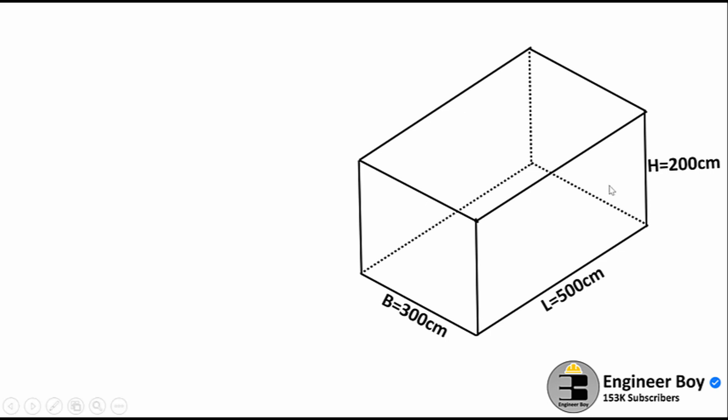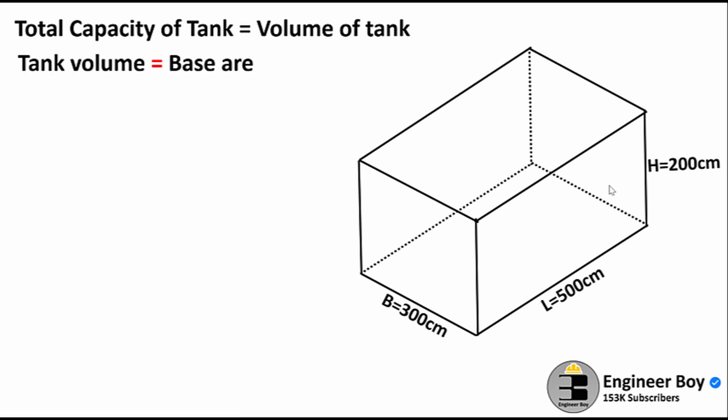The total capacity of the tank can be taken as the tank volume, and the volume of tank equals the area of the base times its depth. Area of the base can be taken as length times breadth, and then the depth which converts the area into volume.